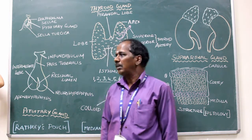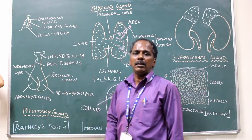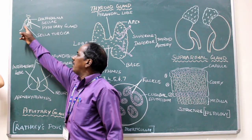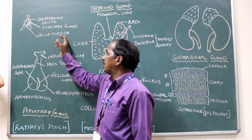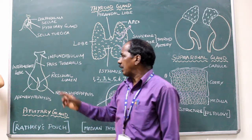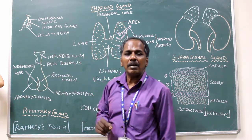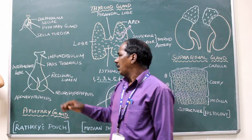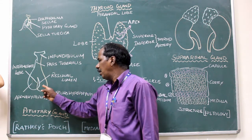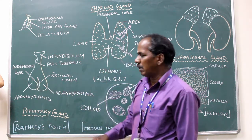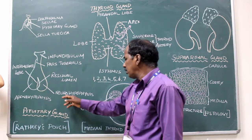Pituitary gland — it is a small peanut-shaped gland situated in the hypophyseal fossa, or sella turcica. It is attached to the base of the brain by a stalk known as the infundibulum. It consists of an anterior lobe and a posterior lobe. The anterior lobe is otherwise known as adenohypophysis and the posterior lobe is otherwise known as neurohypophysis.